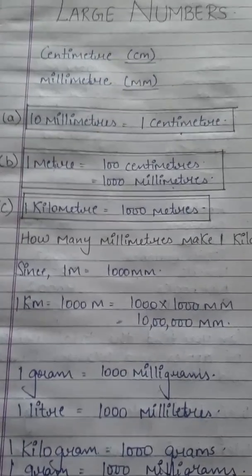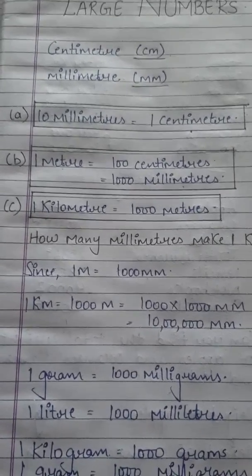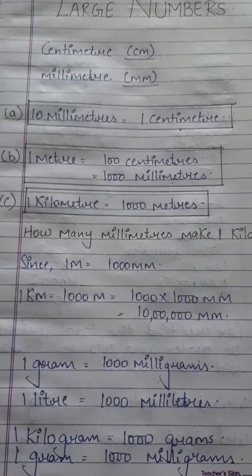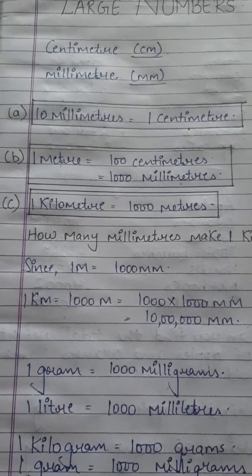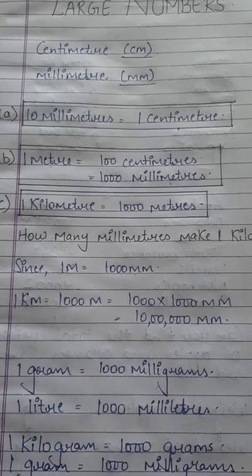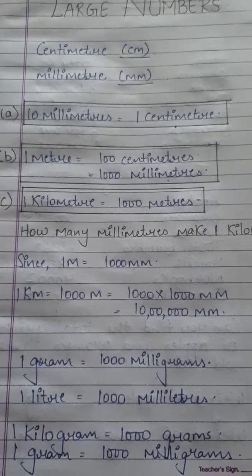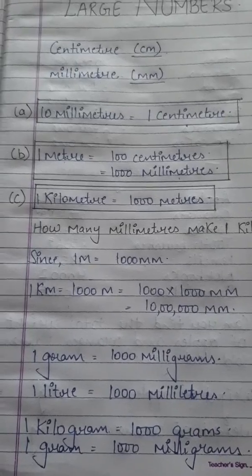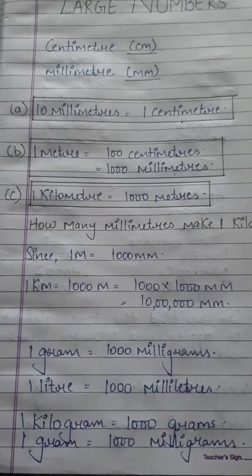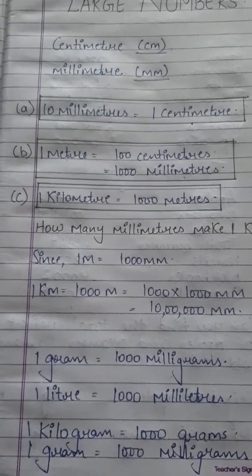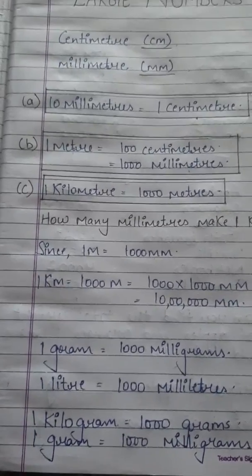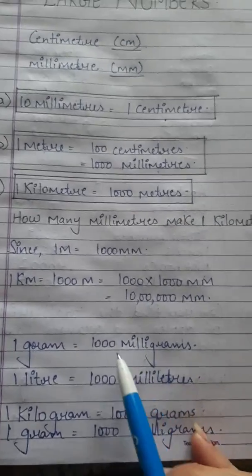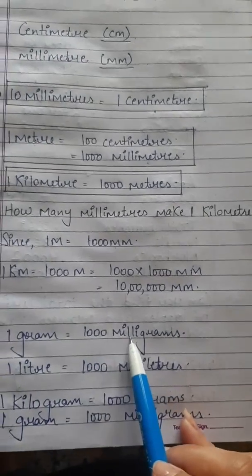Children, when we get ill and need to take medicine, the quantity is very small — it cannot be measured in kilograms. So it is measured in milligrams. 1 gram equals 1000 milligrams.